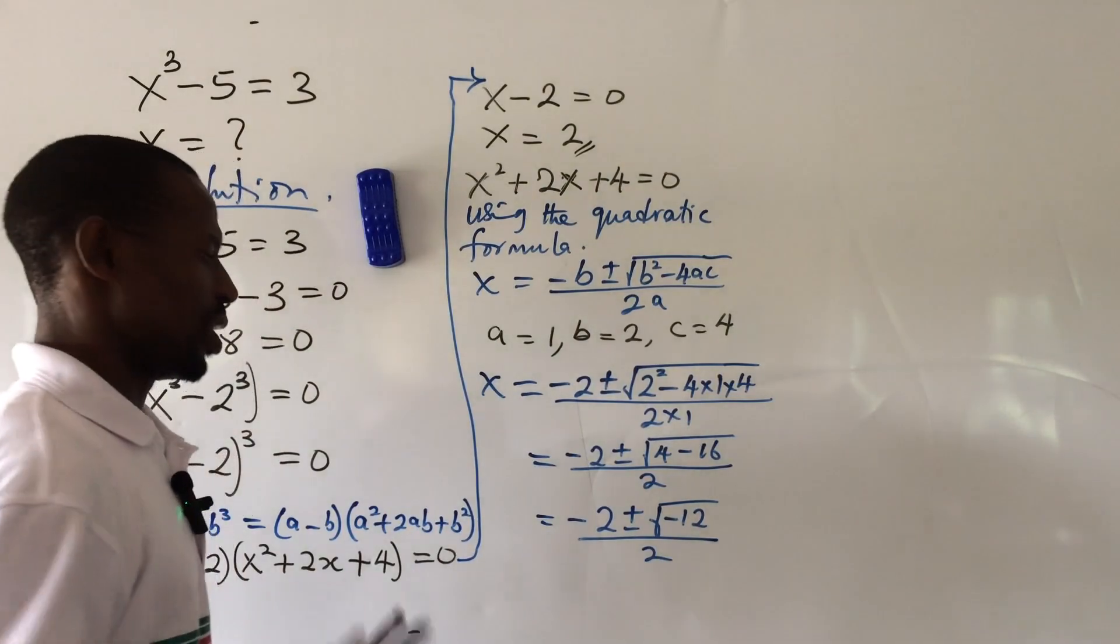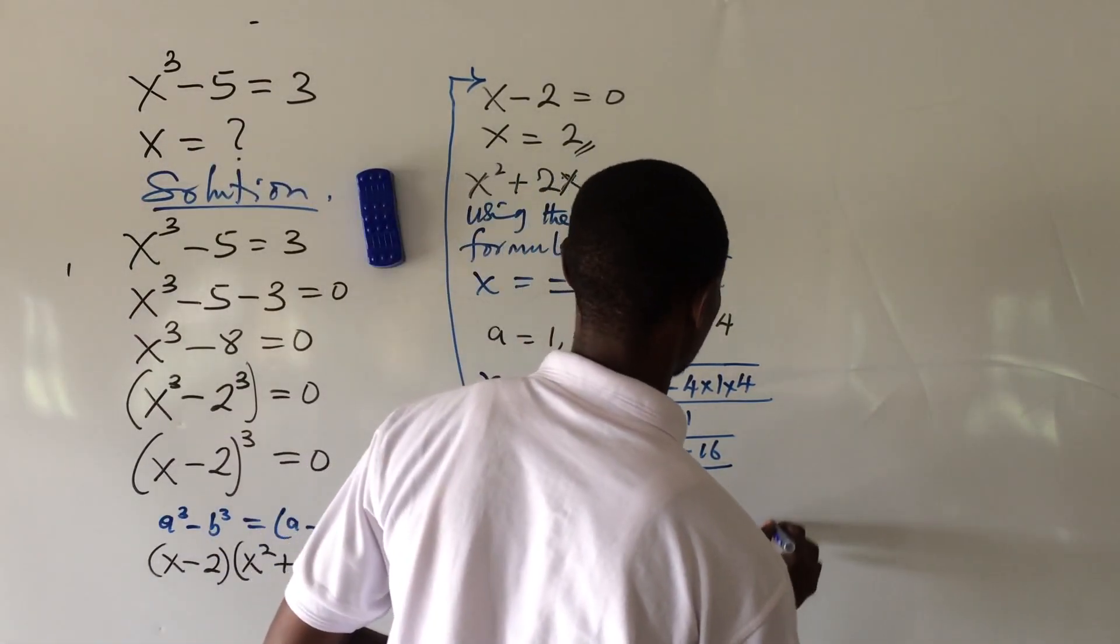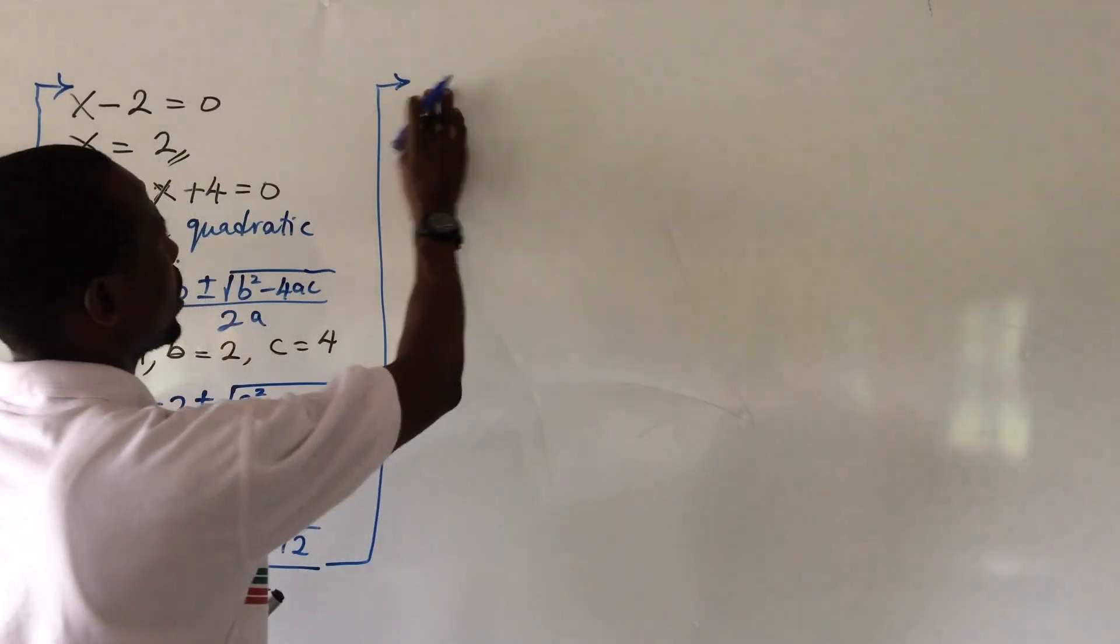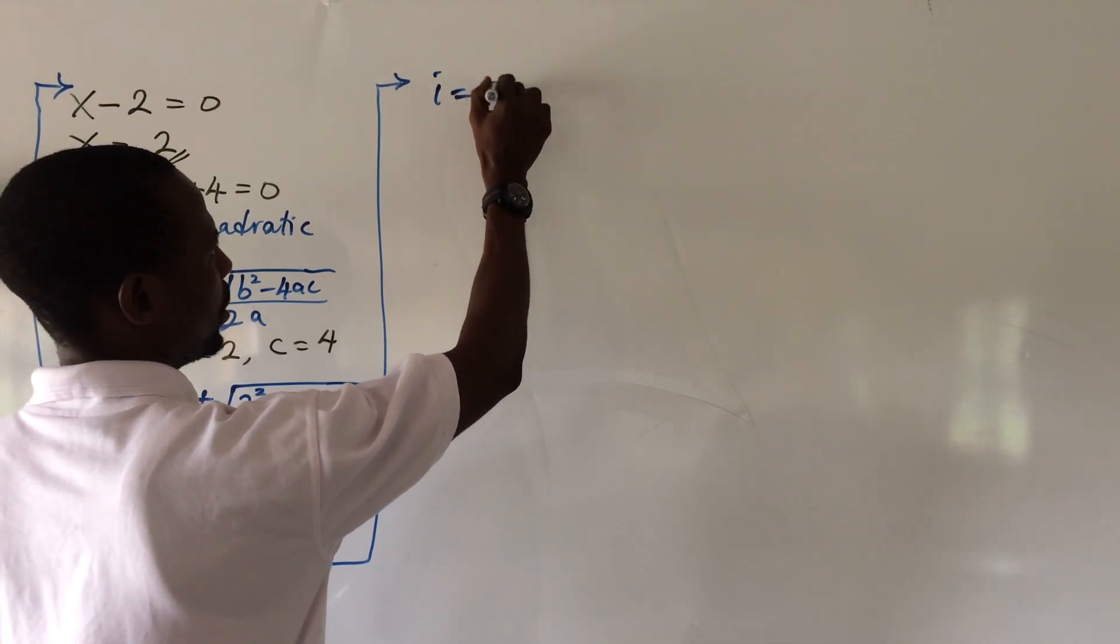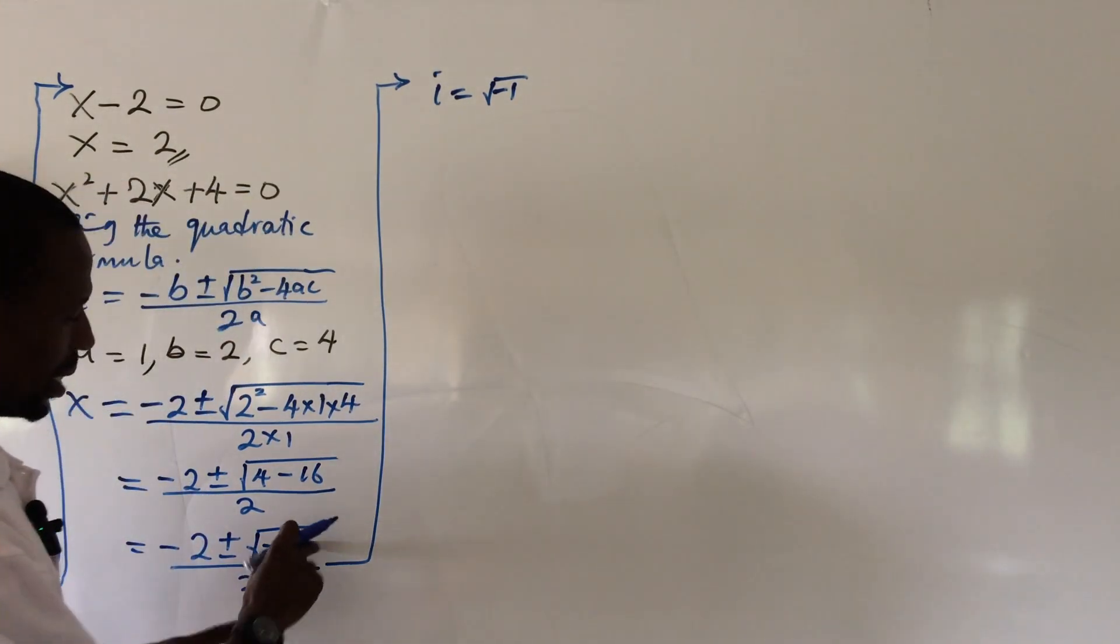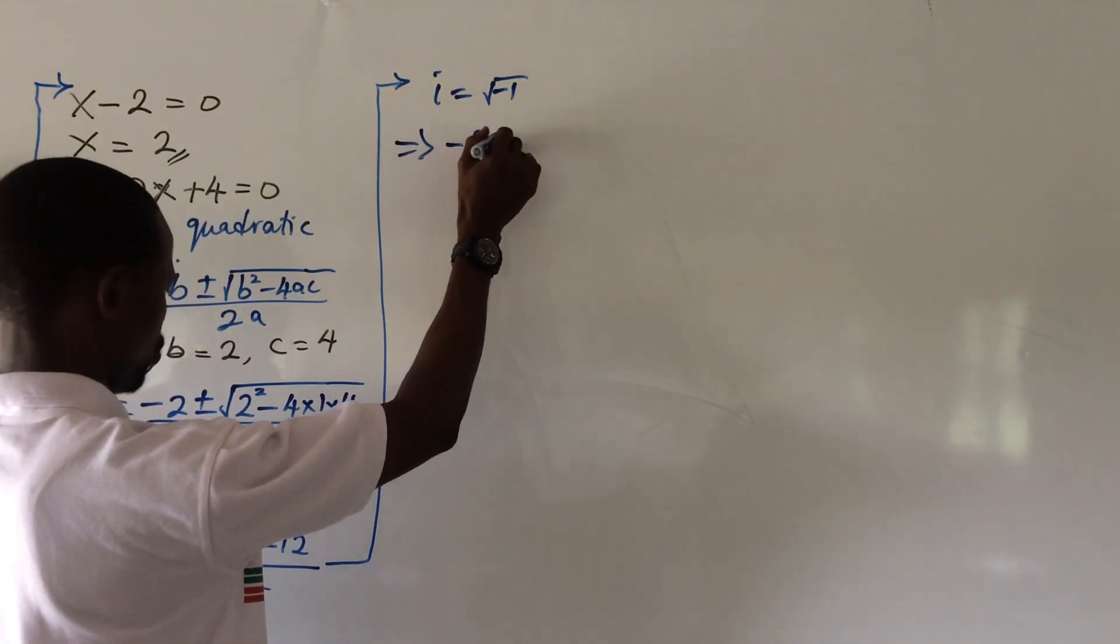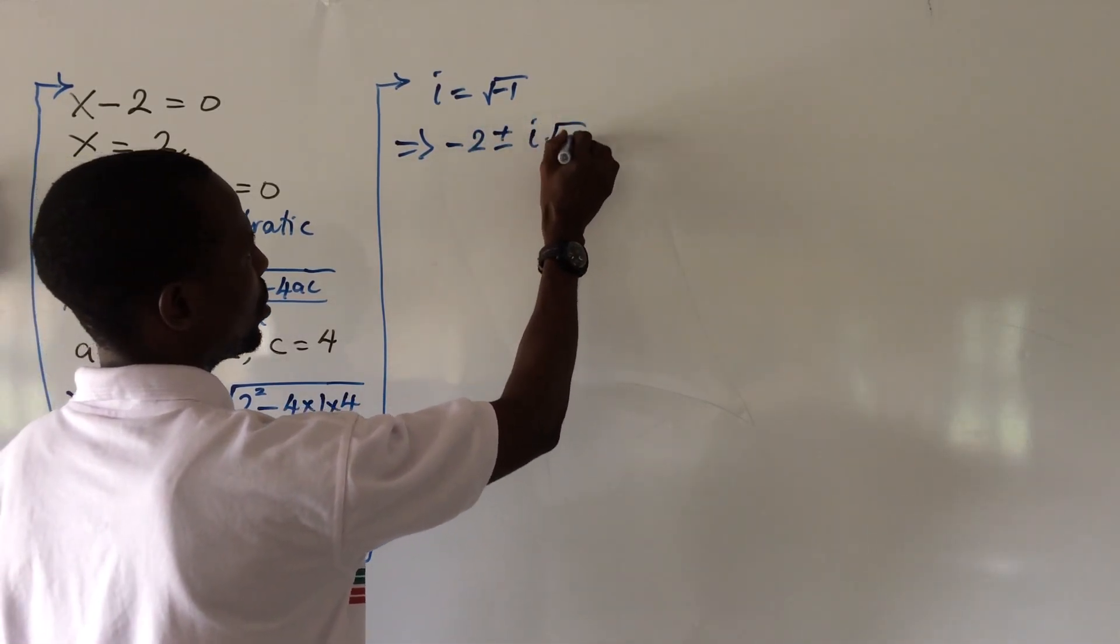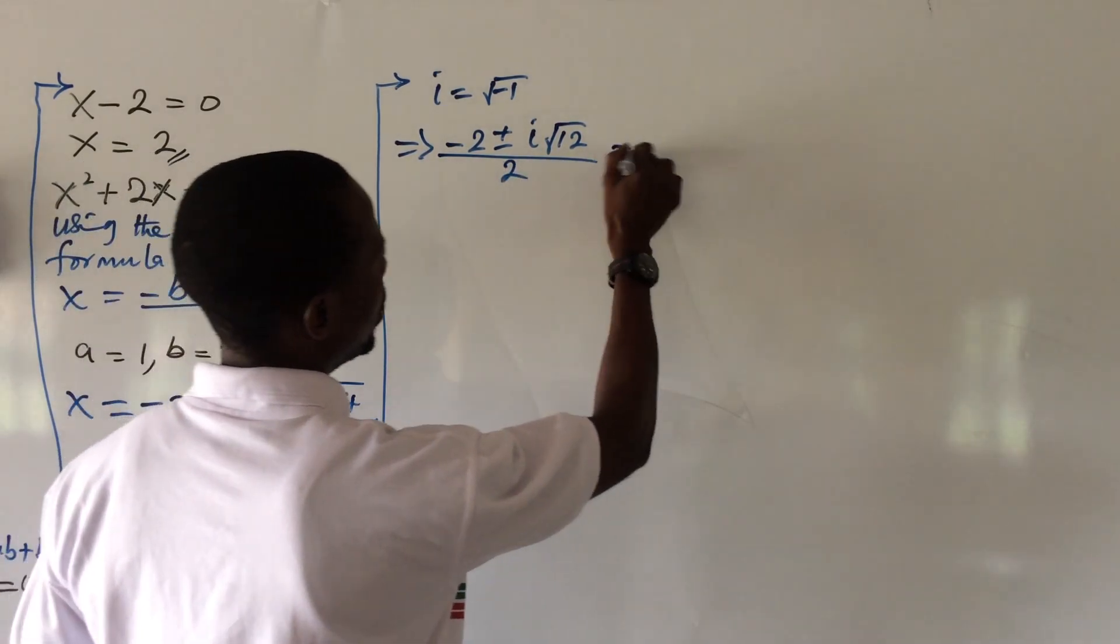So if we recall our identity from here, let's proceed from here. We'll bring in our identity. So recall that i, which is imaginary number, is equivalent to root minus 1.